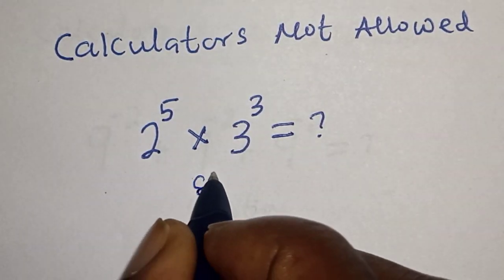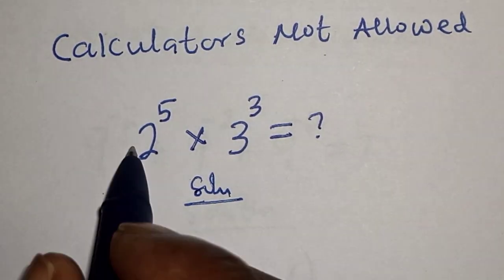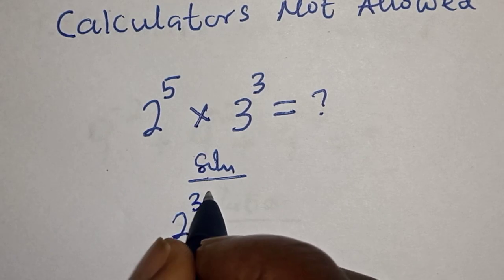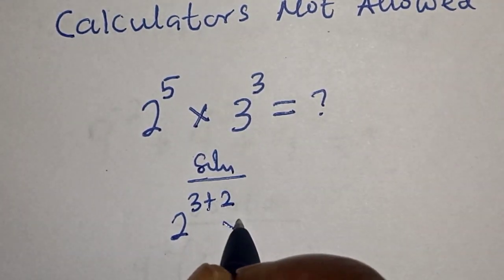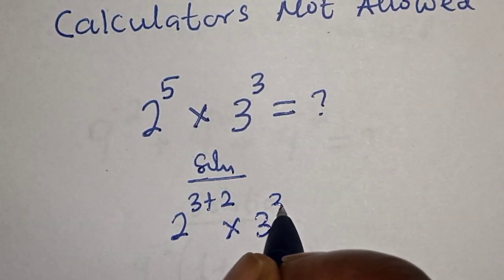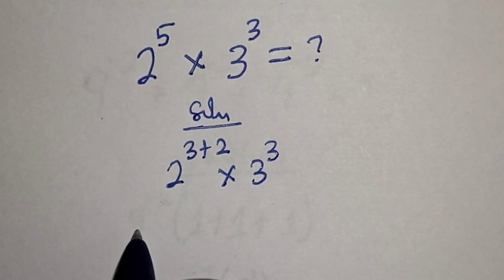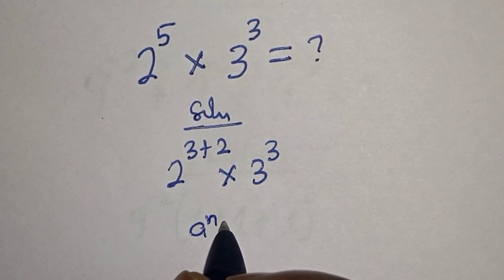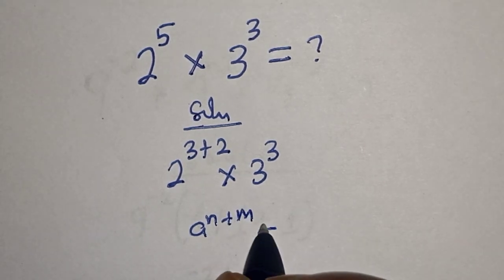Solution: 2 raised to power 5 can be written as 2 raised to power 3 plus 2 multiplied by 3 raised to power 3. Then take note of this rule that a raised to power n plus m is equal to a raised to power n multiplied by a raised to power m.